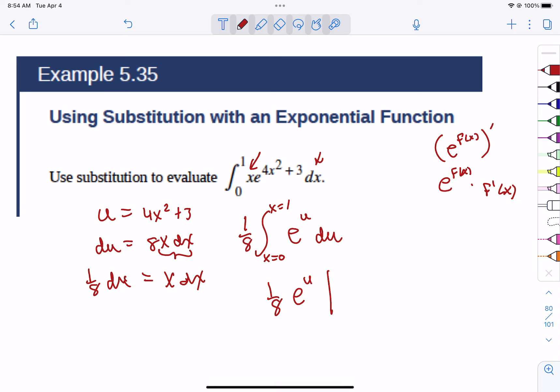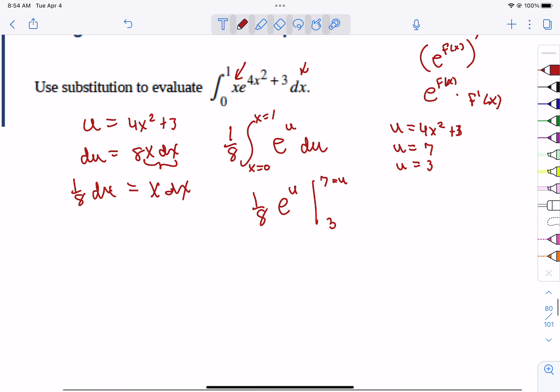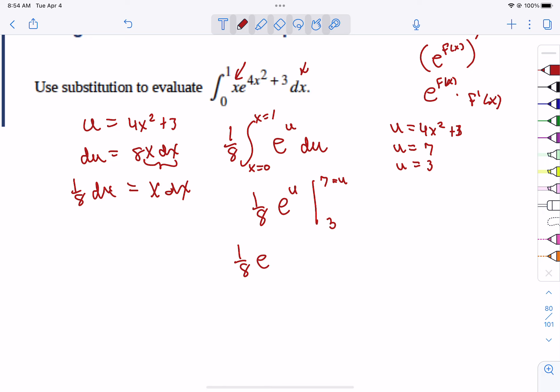Now, let's fix our boundaries. u is 4x² plus 3. So when x is 1, we get 4 times 1 plus 3 or 7. So that would be our upper bound. If we plug in for x 0, we get 3. So that would be our lower bound. Now, we never have to worry about x's ever again. So that's the technique where you can change the boundaries to be u's. These are u's. And if they're u's, you just get to stick them in. And so the answer is 1/8 e⁷ minus 1/8 e³.